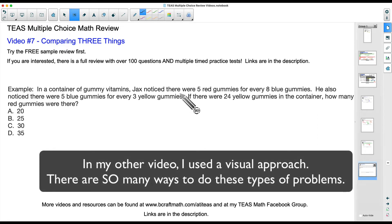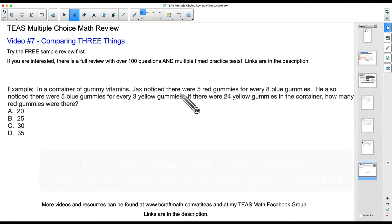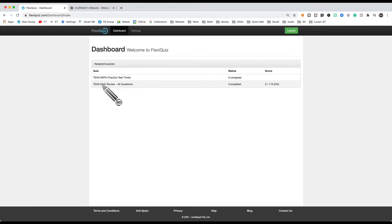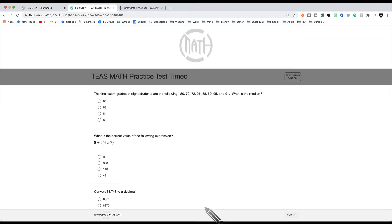But before we do that, there is a huge update to my multiple choice math review. For those that have purchased the math review, when you log into your account, you've always had this one here, TEAS math review all questions. There's over 100 questions, but also what I've added here at no additional charge is the TEAS practice test timed. So what is this? It takes out of those over 100 questions, it pulls 36 random questions, and yes, you will be timed.